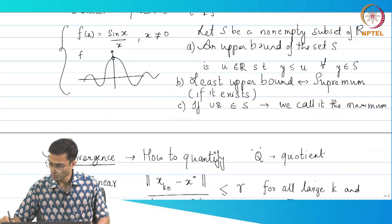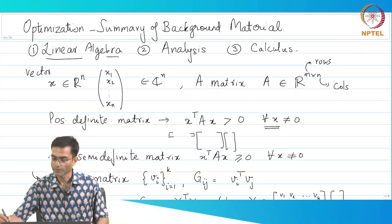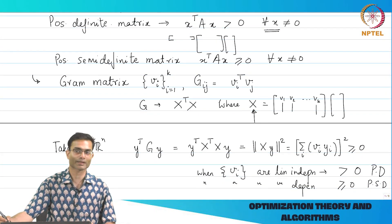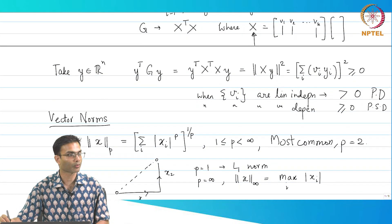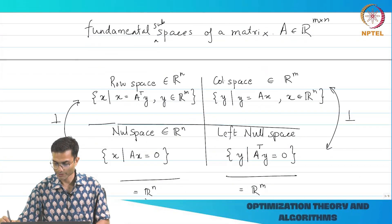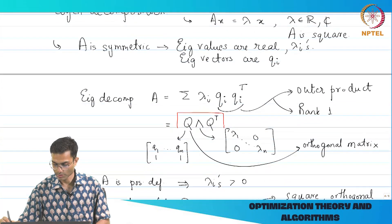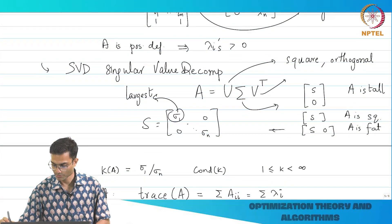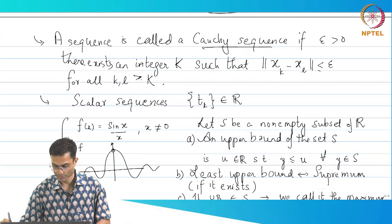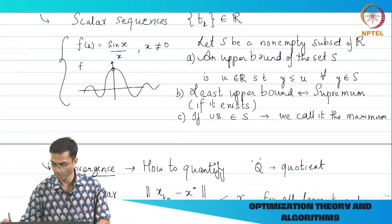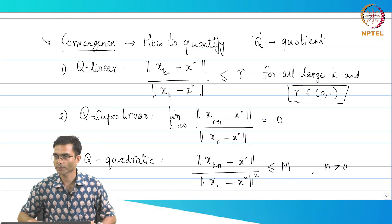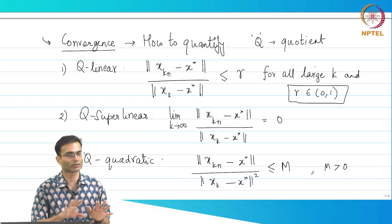So let us just go over what we have looked at, right. So we started with this review of linear algebra. Now those of you who have not taken linear algebra can, after this class, take a call about how comfortable you feel with linear algebra, right. Vector norms, matrix norms, fundamental subspaces, eigenvalue decomposition, singular value decomposition, something about convergence of a sequence, definitions of upper bounds and rate of convergence. These are some of the things that we have looked at.